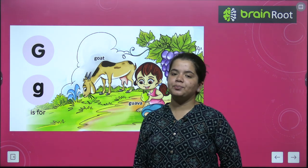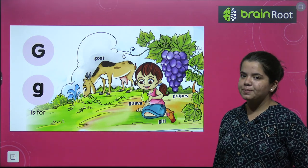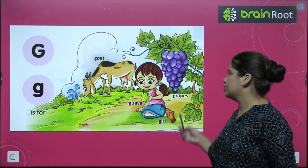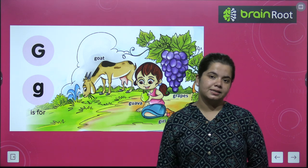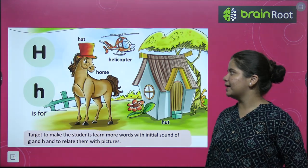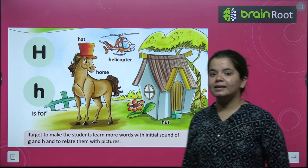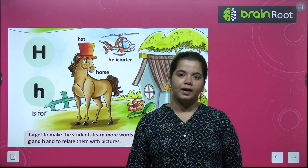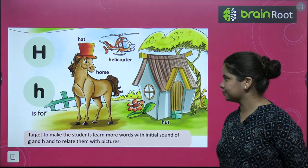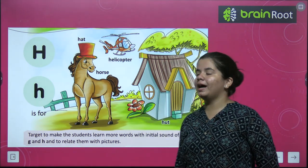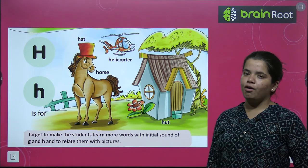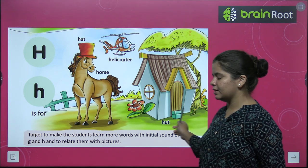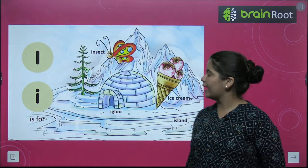Next hamare paas hai G. G for grapes, G for goat, G for guava, G for girl. Next hamare paas hai H. G ke baad H aata hai, right. So G hum ne padh liya, ab hum dekhenge H. H for hat, H for horse, H for helicopter, H for hut. Yeh hamara H ka tha.